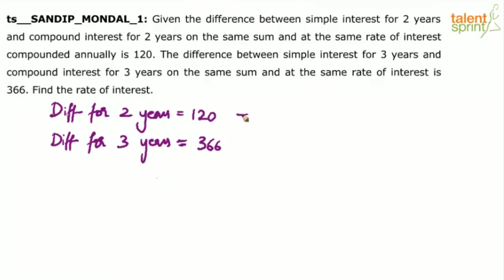Use the formula. You know that in case of 2 years, the principle P is equal to D into 100 squared by R squared.